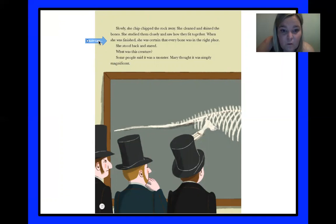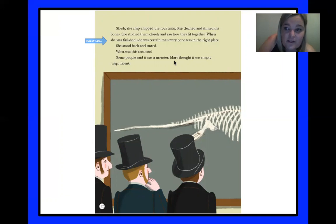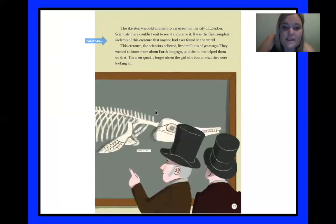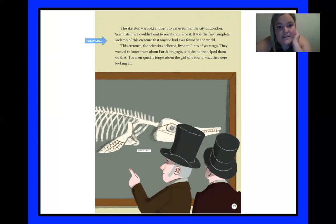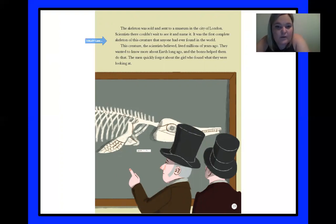When she was finished, she was certain that every bone was in the right place. She stood back and stared — what was this creature? Some people said it was a monster. Mary thought it was simply magnificent. The skeleton was sold and sent to a museum in the city of London. Scientists there couldn't wait to see it and name it. It was the first complete skeleton of this creature that anyone had ever found in the world. This creature, the scientists believed, lived millions of years ago.